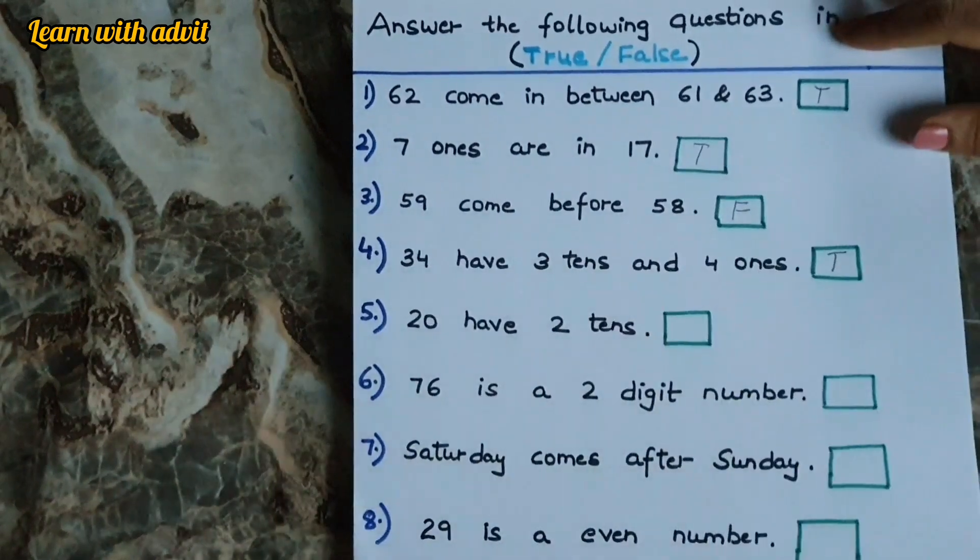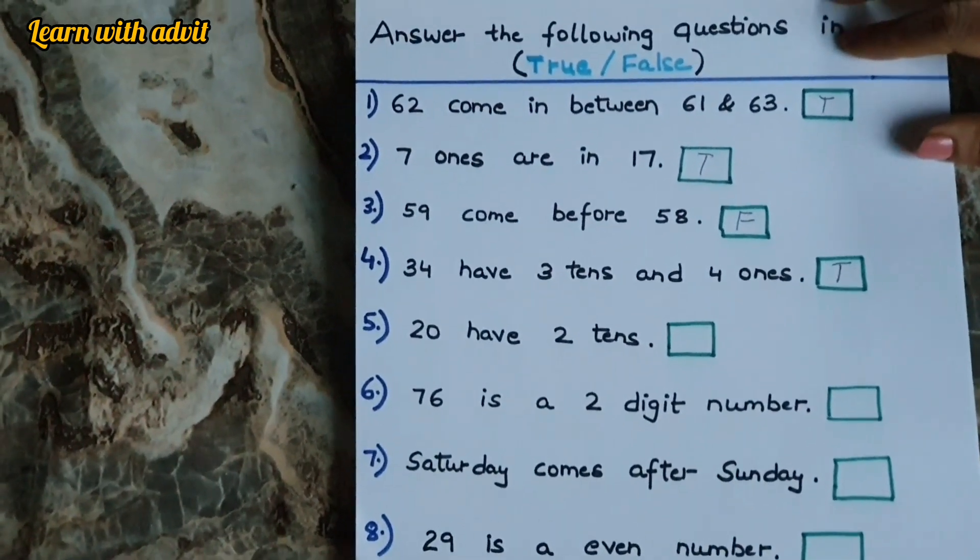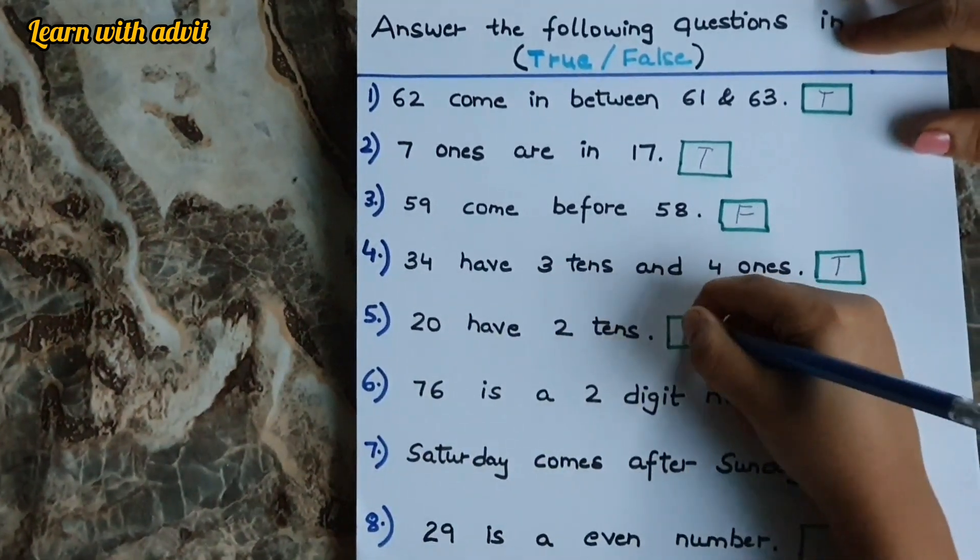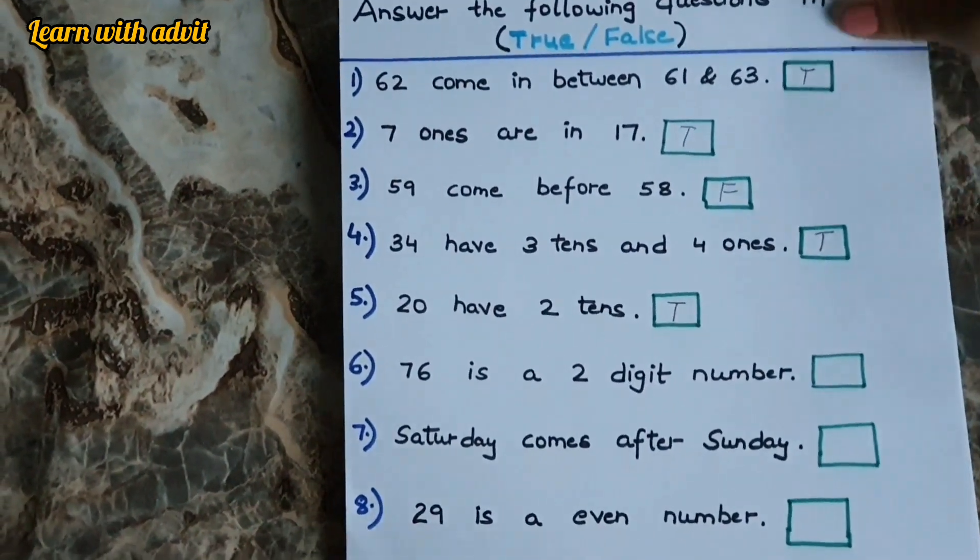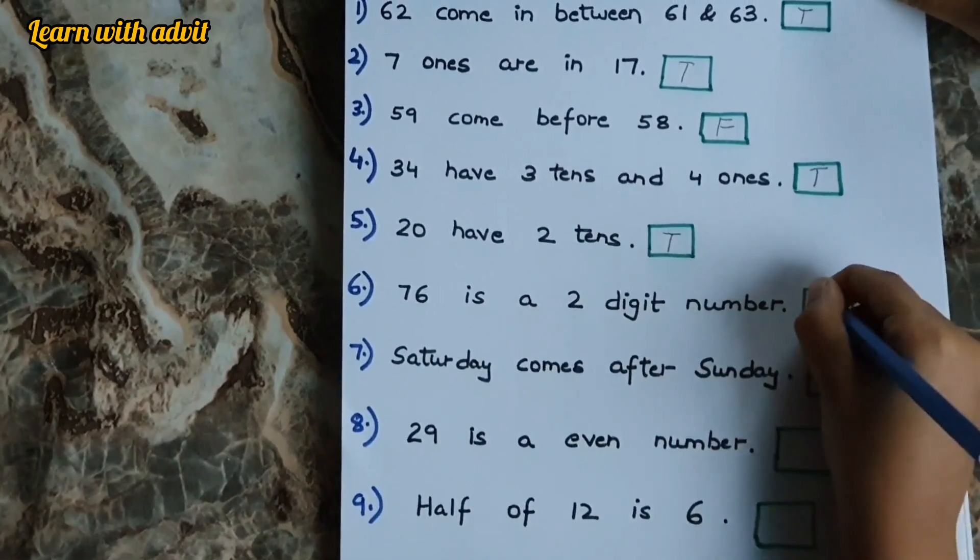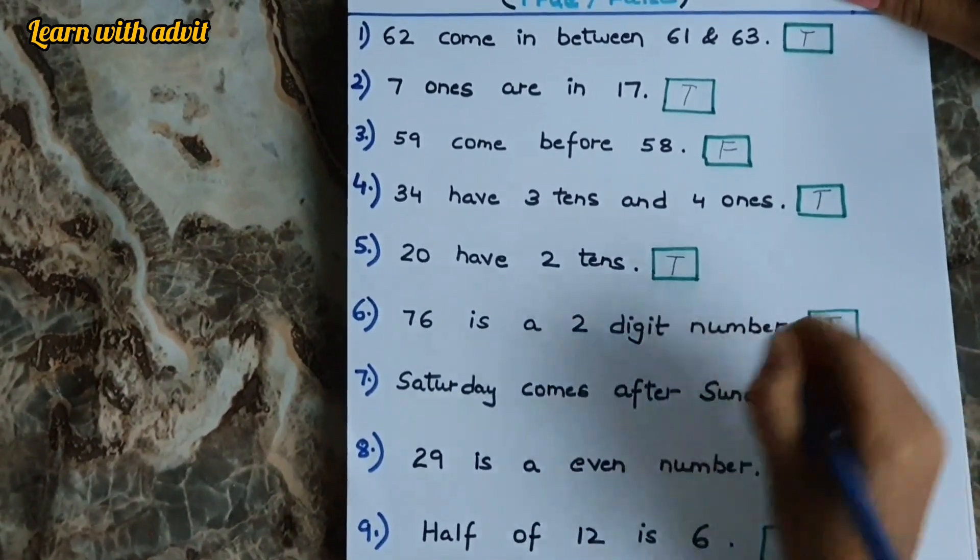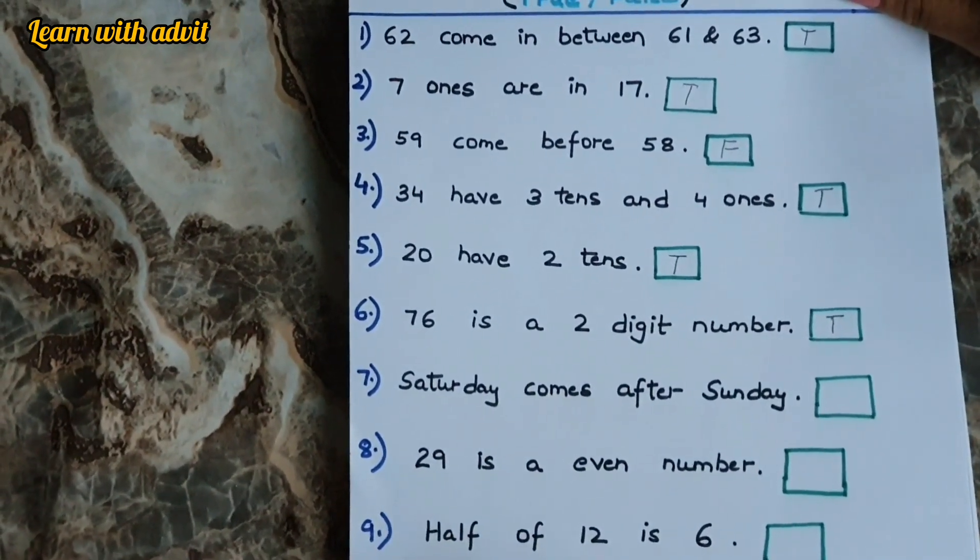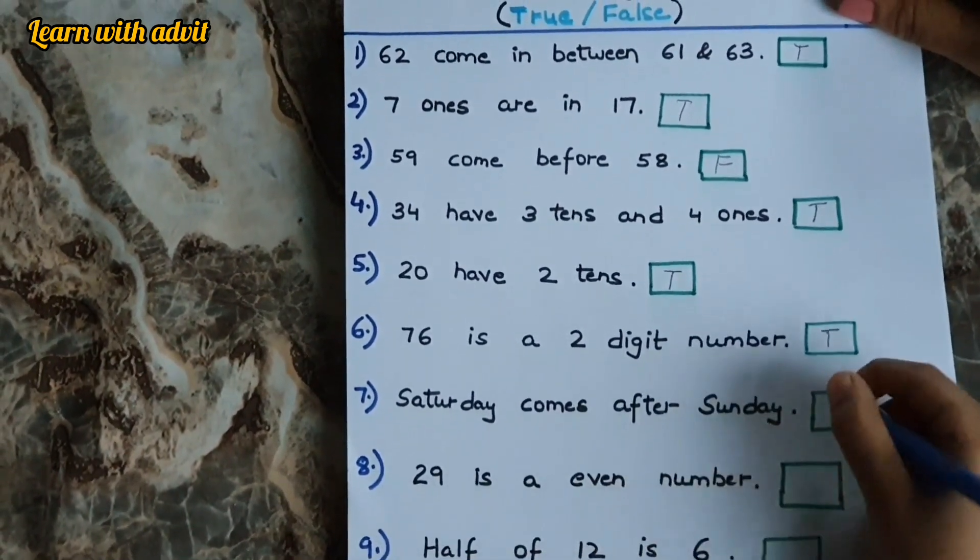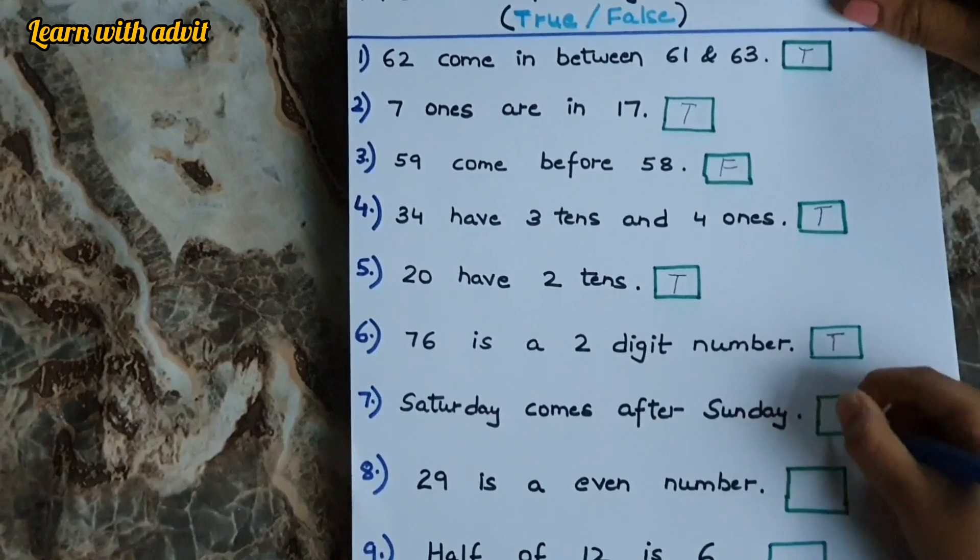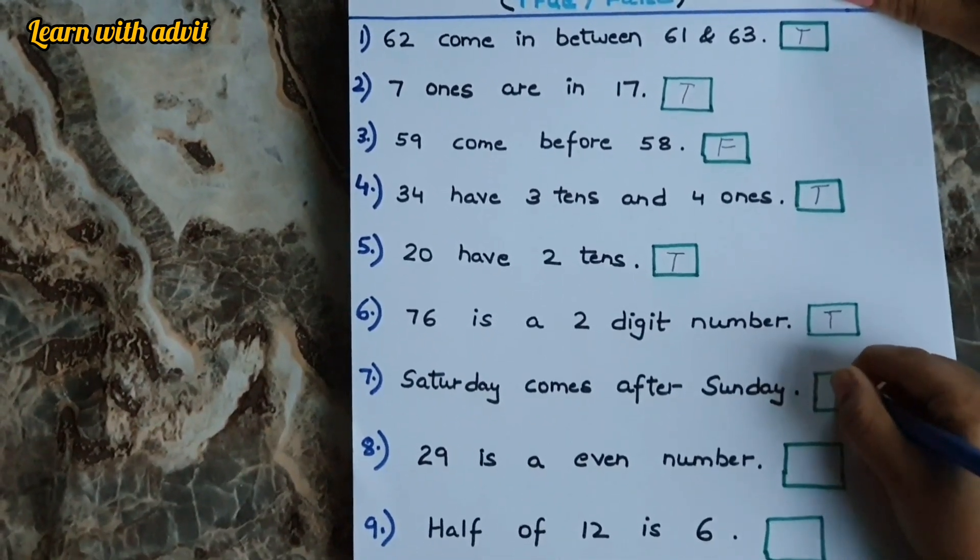20 have 2 tens. That's true. 76 is a 2 digit number. That's true. Saturday comes after Sunday. No. It comes before Sunday. So it's F.